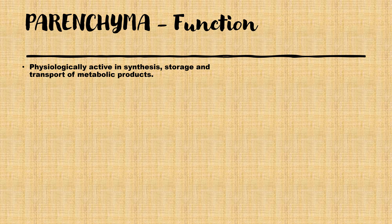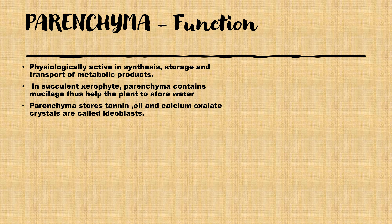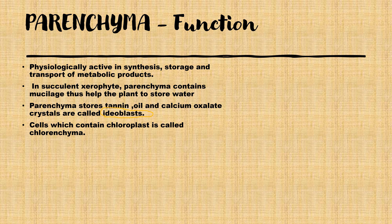Parenchyma stores carbohydrates, proteins, and fats. In xerophytes, parenchyma also contains mucilage which helps in storing water. Parenchyma cells can also store tannin, oil, and calcium oxalate; the parenchyma storing these substances is called ideoblasts — an important term to remember. Some parenchyma contains chlorophyll molecules and is called chlorenchyma (chlorophyll + parenchyma), which is important for the synthesis of food.